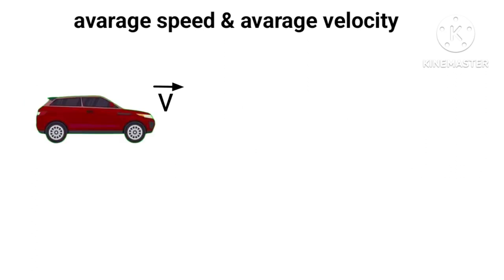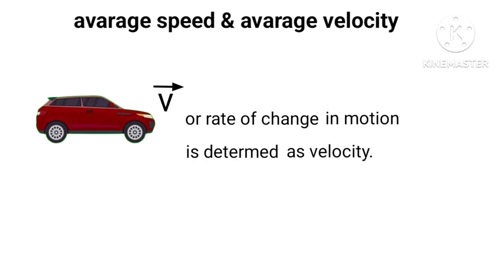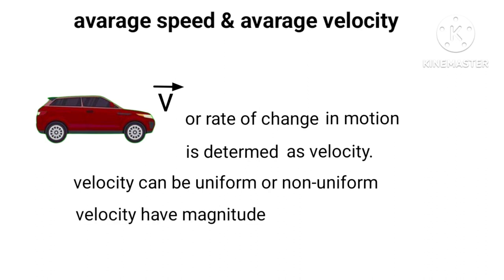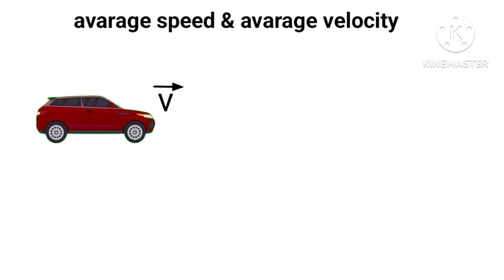Speed with direction, or the rate of change in motion of an object, can be termed as velocity. The velocity of an object can be uniform or non-uniform. Here velocity has magnitude and direction. Velocity can be changed either by changing magnitude or direction.